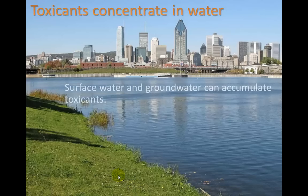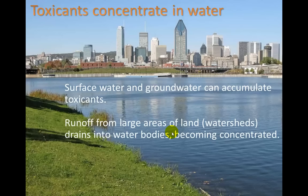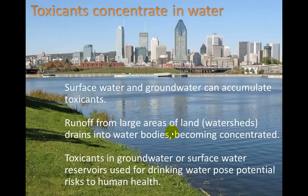Toxicants concentrate in water. Surface water and groundwater can accumulate these toxicants. When water lands on ground, it flows downhill and pools in areas to form lakes, ponds, creeks, or rivers. Runoff from large areas of land — what we call watersheds — drains into water bodies, becoming concentrated. Toxicants in groundwater or surface water reservoirs used for drinking water pose potential risks to human health. The last place we want pollutants to go is into our groundwater, because it's very difficult to remove them and we need that groundwater — we pump it up with wells for drinking and other purposes.